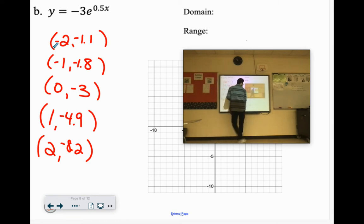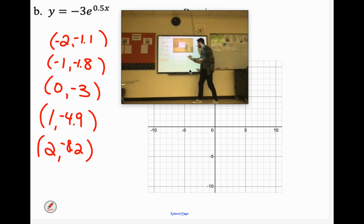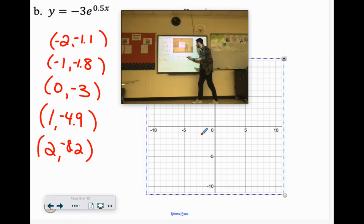All right. So here's our numbers. Let's see what this graph looks like. Negative 2, negative 1.1. We have negative 1, negative 1.8. We have 0, negative 3, 1, negative 4.9. And then 2, negative 8.2. It's about there. So this will just be an upside down one. It almost looks like I hit some lines.